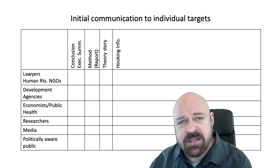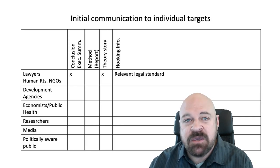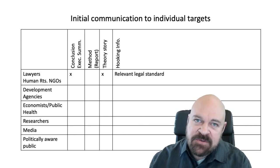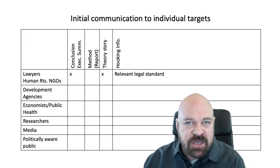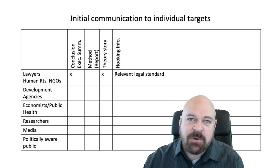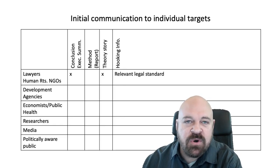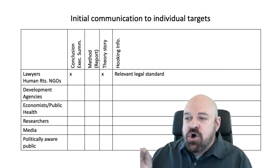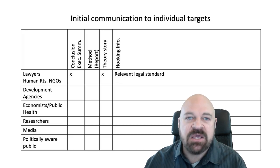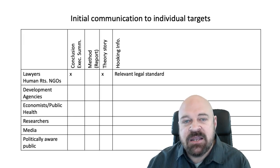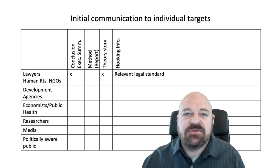Let's talk about lawyers and human rights NGOs. For these folks, if you had the first five-minute intro meeting, I would include the findings and executive summary. I would include a theory story that tells a story of personal individual people, because lawyers and human rights NGOs are going to be good at looking at that and figuring out if there are any legal or human rights ramifications between a person and a government that has obligations towards them. The theory story for lawyers should highlight what is the role of the government. The hooking information you need to include is: what is the legal standard, what is the law, what is the treaty, what is the cause of action or a claim that a person can have? They need that to know how this issue fits into the legal framework in which they work.